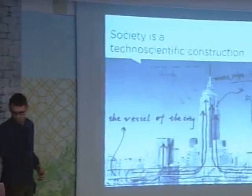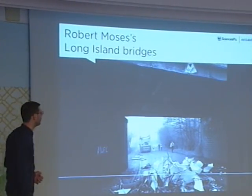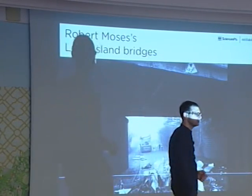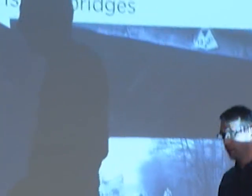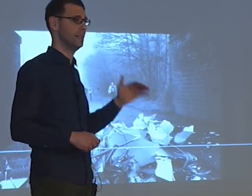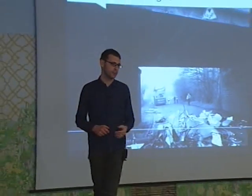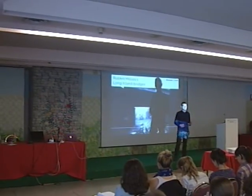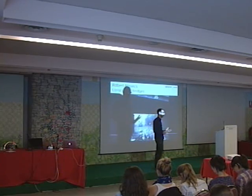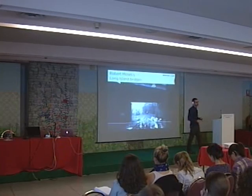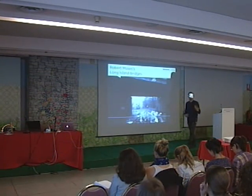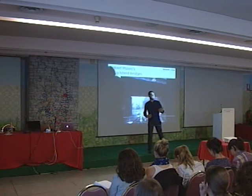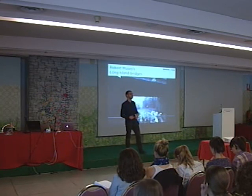The most well-known example is the bridges of New York, described by Langdon Winner in a very interesting book called 'Do Artifacts Have Politics?' — one of many technical artifacts examined. The bridges cross the roads that go from New York to Long Island. They were built by Robert Moses, a very famous architect who built much of New York as we know it. Long Island was considered the garden of New York — a very nice beach where people could go on weekends to spend time with family.